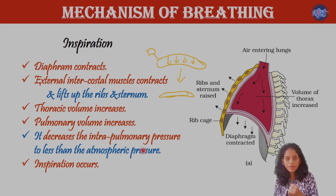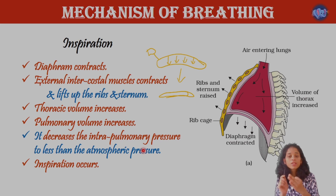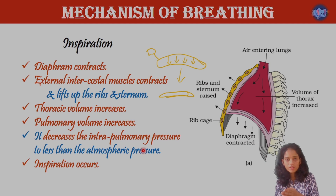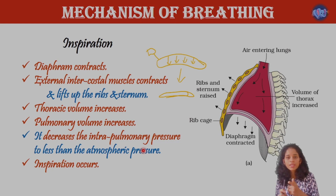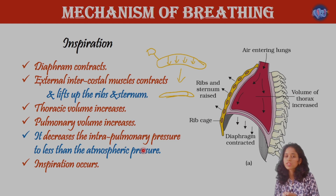Point by point: Diaphragm contracts. External intercostal muscles contract. Ribs and sternum lift up. Thoracic volume increases. Pulmonary volume also increases. Intrapulmonary pressure decreases. The pressure becomes less than atmospheric pressure. So inspiration occurs.